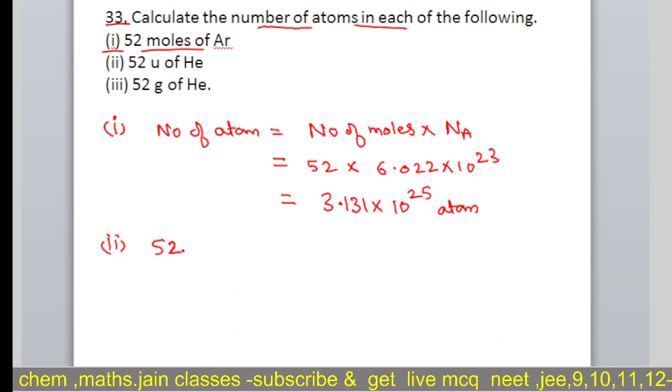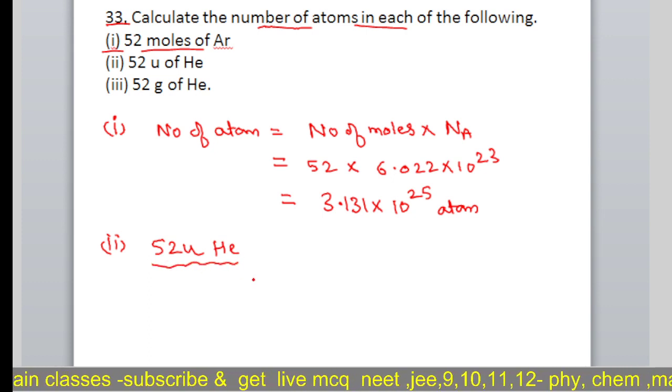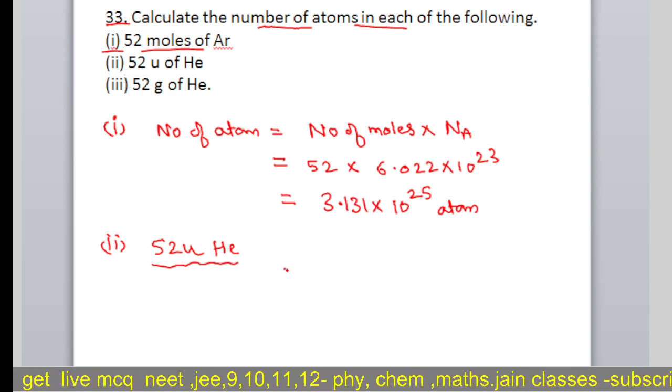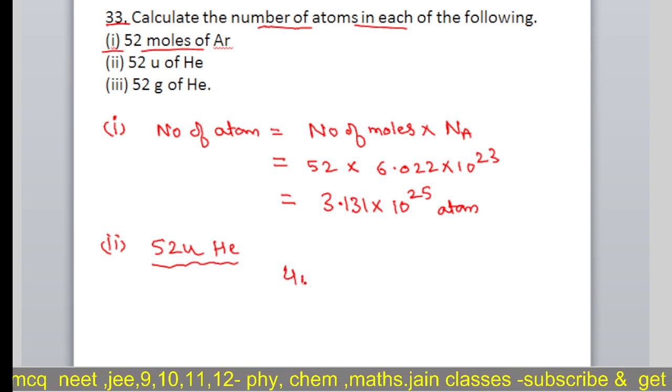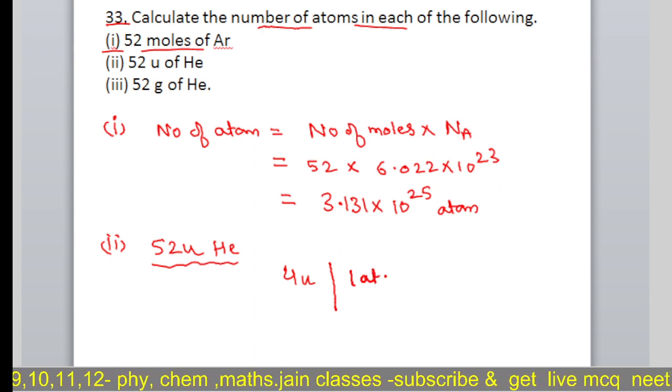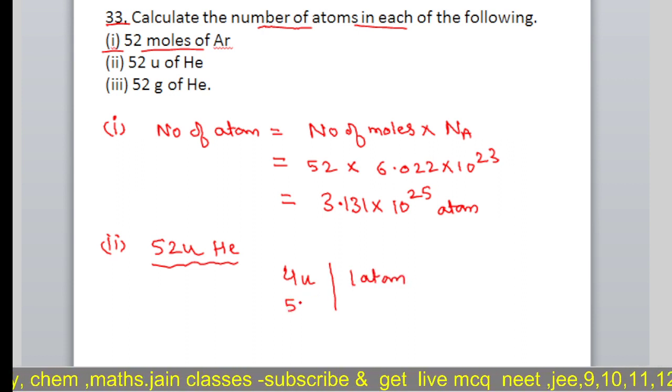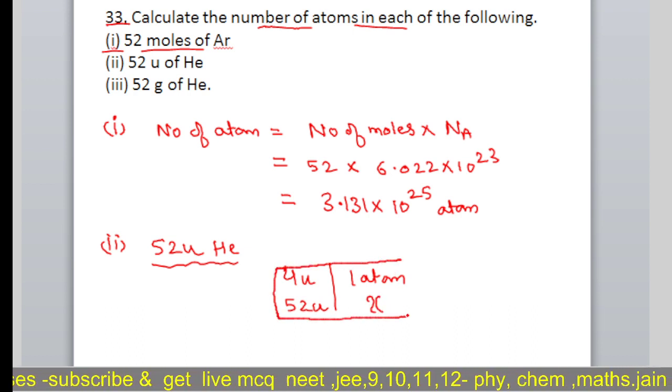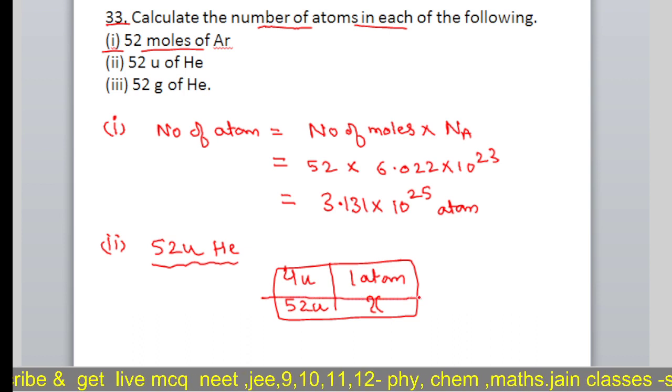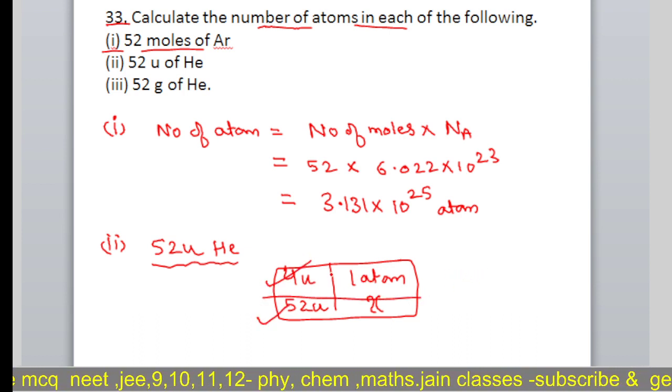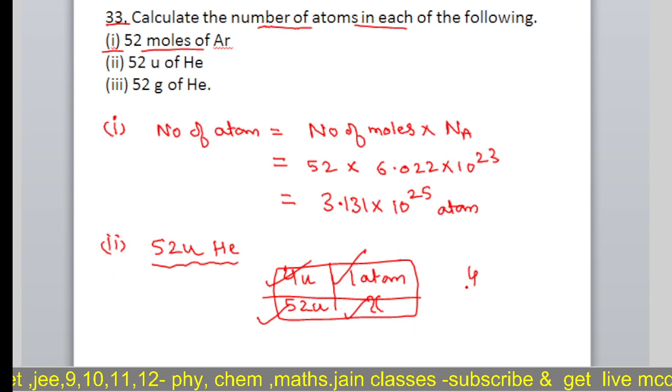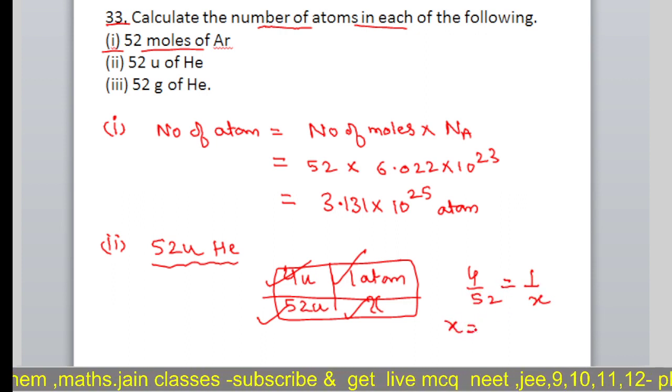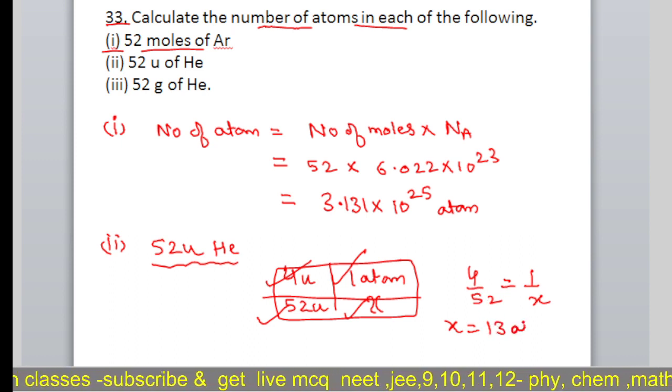The second part is 52 u helium. For this there's a simple method. One atom of helium has a mass of 4u. So in 52 u how many atoms will there be, let's assume x. The method to solve this is x1 by x2 equals y1 by y2. Means 4 by 52 equals 1 by x, so x becomes 52 by 4 which equals 13 atoms.